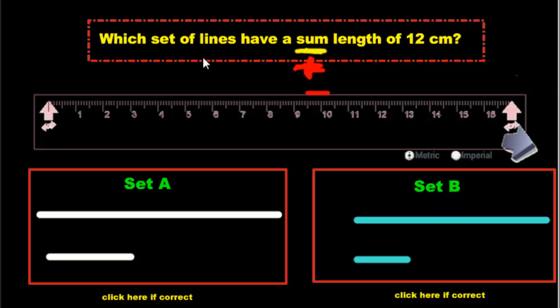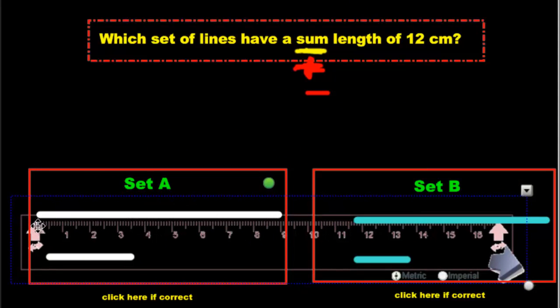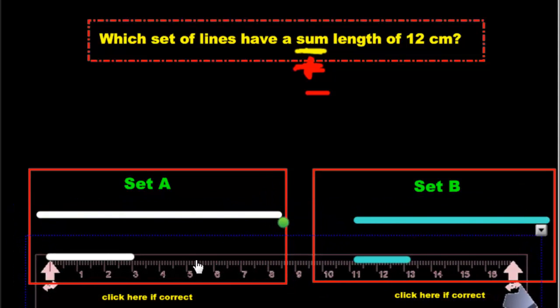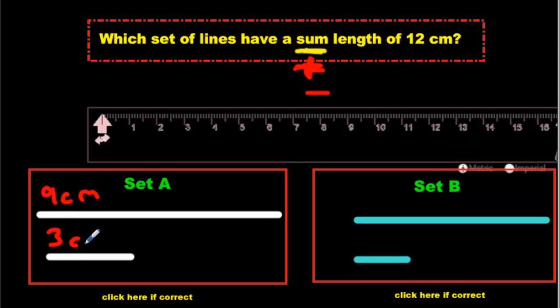What do we have to add? Well, it asks us which set of lines. So we have two sets. We have set A and we have set B. Which sets have a sum of 12? So we'll take our ruler. We'll put it here. And we'll measure this line. It looks like it starts at 0. It goes all the way to 9. So the top line is 9. And the bottom line is, what is it? Look close. Looks like it's about 3 centimeters. So we'll write 9 and 3. We'll write 9 cm. And we'll write 3 cm. And we know the sum of 9 and 3 is what? What's the sum? We've got to add them. You get 12. 12 centimeters. Which is what the question states. We found our answer.